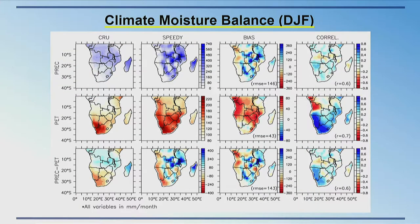Looking at the moisture balance, precipitation isn't too well simulated at this stage. There seems to be a high potential evapotranspiration being simulated by SPEEDY, particularly over the west coast and Angola in the northern section. This is probably resulting in lower moisture levels — the lack of rainfall in that region. Evapotranspiration itself isn't too badly simulated except for that one region.